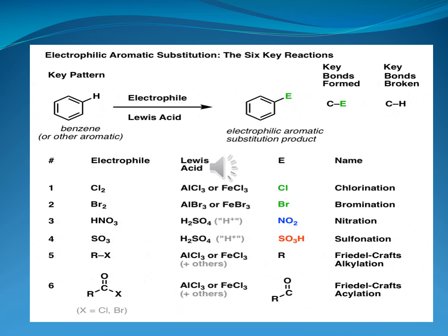When we take alkyl halides as an electrophile in the presence of a Lewis acid such as aluminum trichloride, FeCl3 or others, and the alkyl group behaves as the electrophile, the reaction represents Friedel-Crafts alkylation. And finally, when we take an acyl halide as the electrophile in which aluminum trichloride and FeCl3 are used as Lewis acids and the acyl group behaves as the electrophile, this reaction is known as Friedel-Crafts acylation.